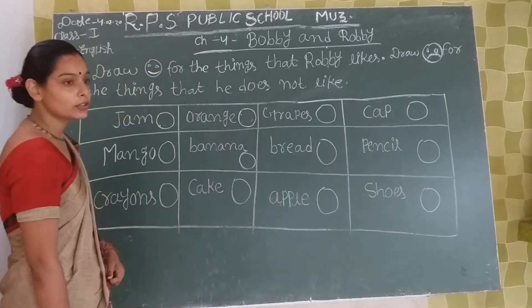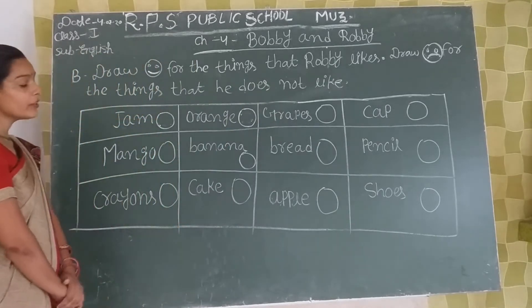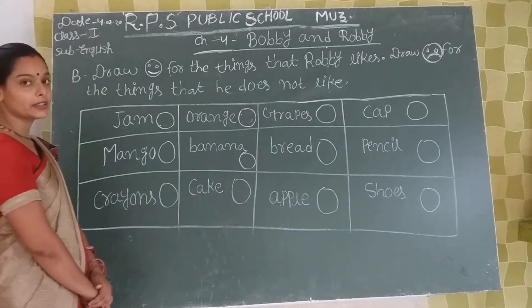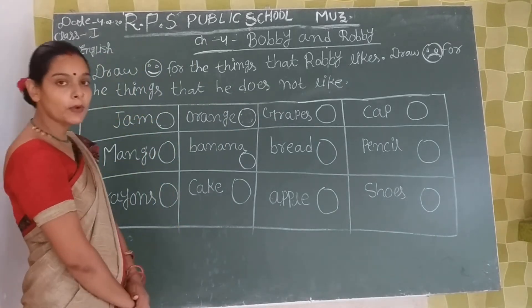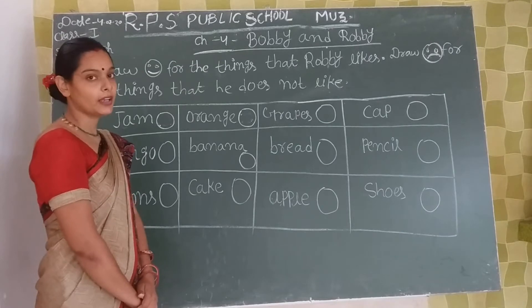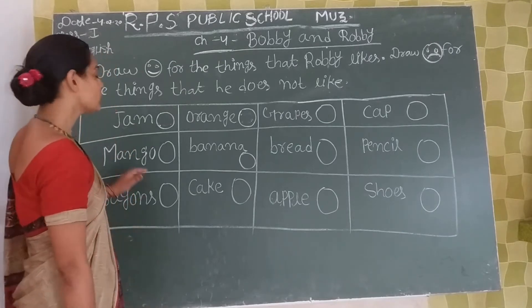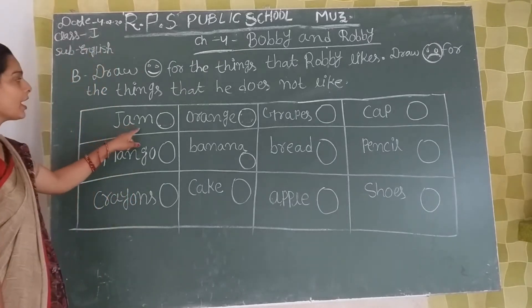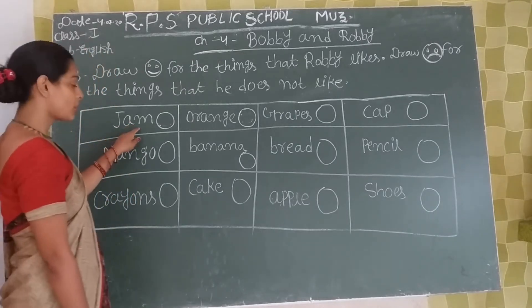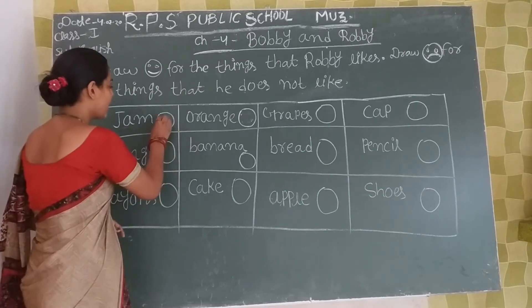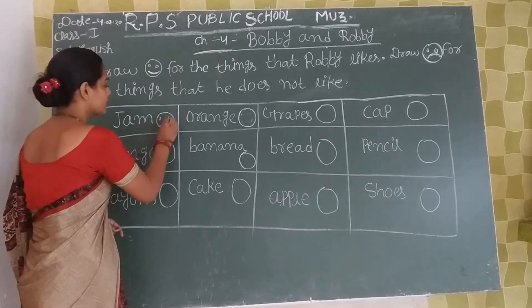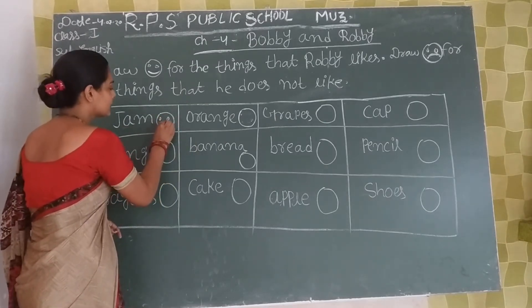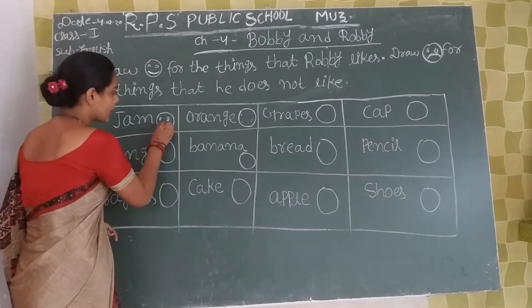Okay students, you have to do so much. So let's start. Jam — Robbie doesn't like jam, so we'll make sad mouth.